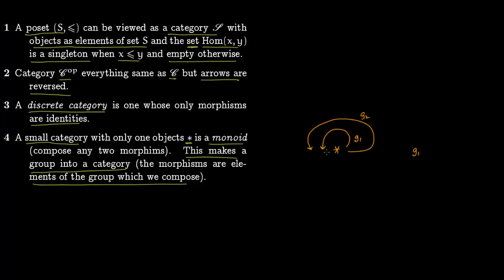For a group viewed as a category, there is one object — call it ★ — and the morphisms are elements of the group. Composing g1 and g2 again lands at ★, so g1 ∘ g2 is again in the group. All arrows go from the single object to itself.